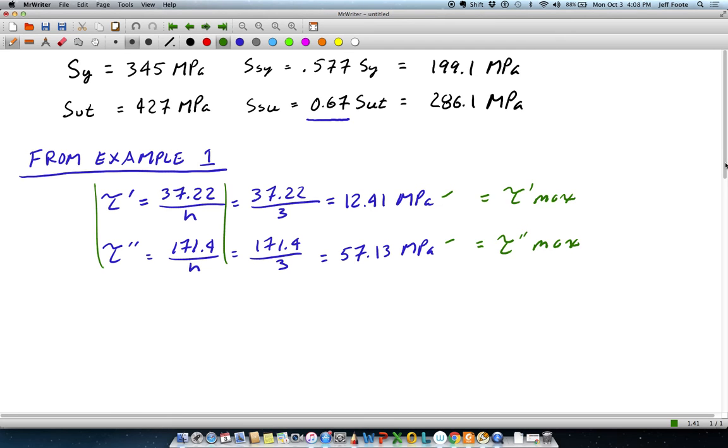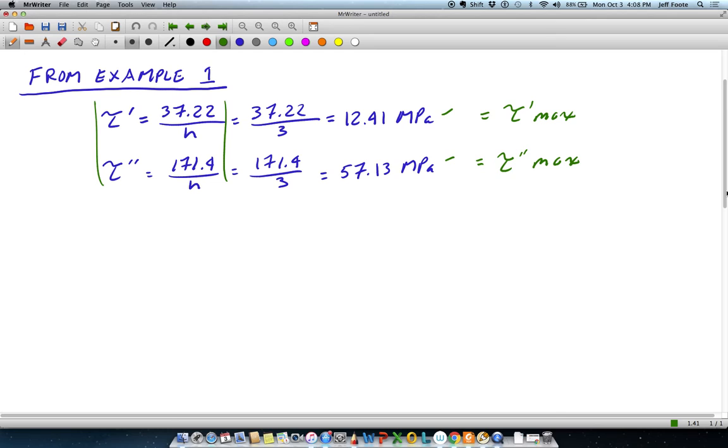And those both represent tau prime max and tau double prime max. Now with the weld, we are going to include a stress concentration for fatigue for a weld. And for both of these, what we're going to use is a KFS equal to 1.5. From the table, we've got four options, four potential options for stress concentration in a weld. That's the closest one to this geometry for both the direct and the transverse shear stress. So that's what we'll include.